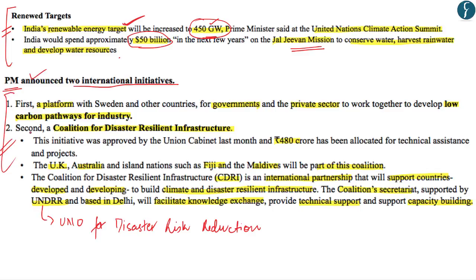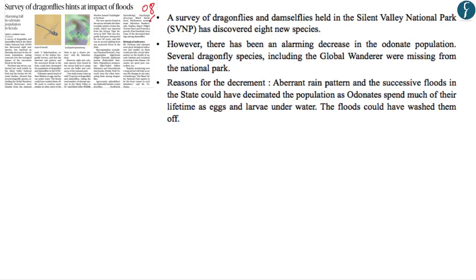With this, let's move on to our next news. This news has been taken from page number eight and reads 'Survey of Dragonflies Hints at Impact of Floods.' This discussion will become relevant from the perspective of GS Paper 3 under the category of environment as well as from the perspective of prelims. The context is that recently a survey of dragonflies and damselflies was held at the Silent Valley National Park in Kerala, which led to the discovery of eight new species. However, at the same time the survey found an alarming decrease in the population of odonates.